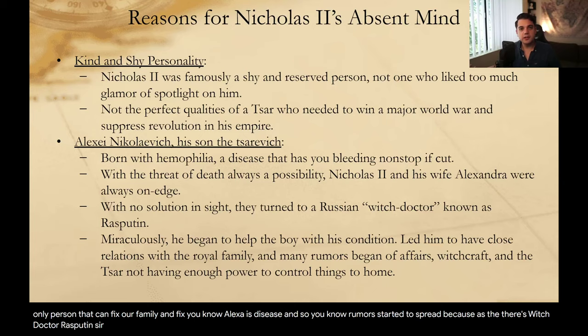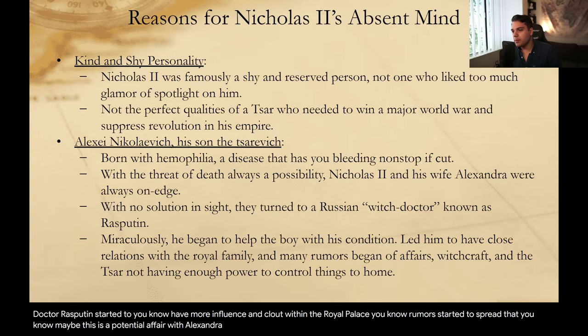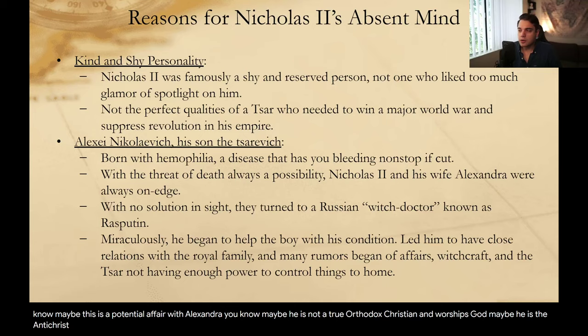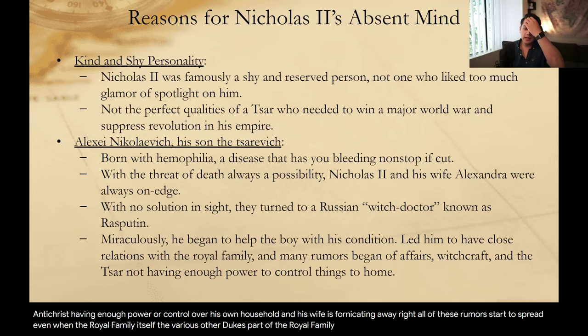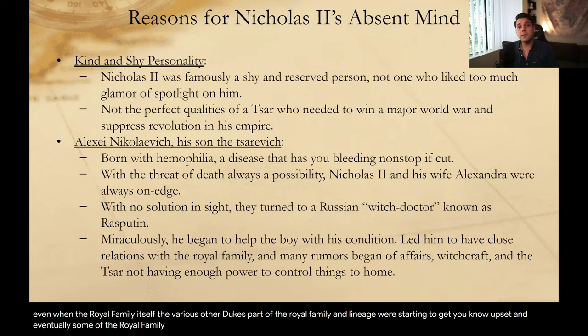Rumors started to spread because as this witch doctor Rasputin started to have more influence and clout within the royal palace, rumors started that maybe there was a potential affair with Alexandra. Maybe he was not a true Orthodox Christian. Maybe the Tsar was not having enough power or control over his own household. All of these rumors started to spread, even within the royal family itself. The various other dukes — part of the royal family and lineage — were getting upset. Eventually, some of the royal family members actually coerced Rasputin into their palace and shot him to death.